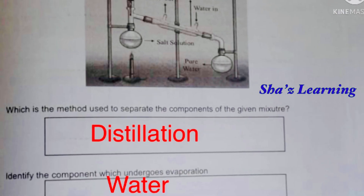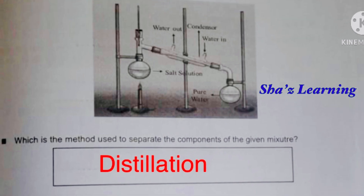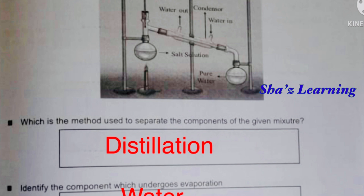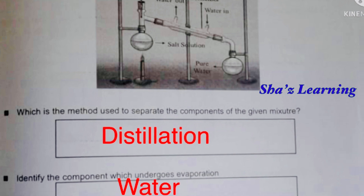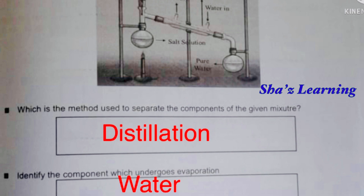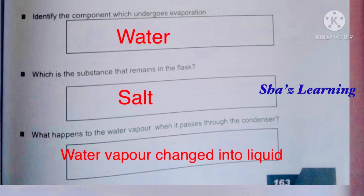Which method is used to separate the components of the given mixture? Salt solution is separated using distillation. We will use this to obtain pure water. The component which undergoes evaporation is water. Which substance remains in the flask? Salt remains in the flask.